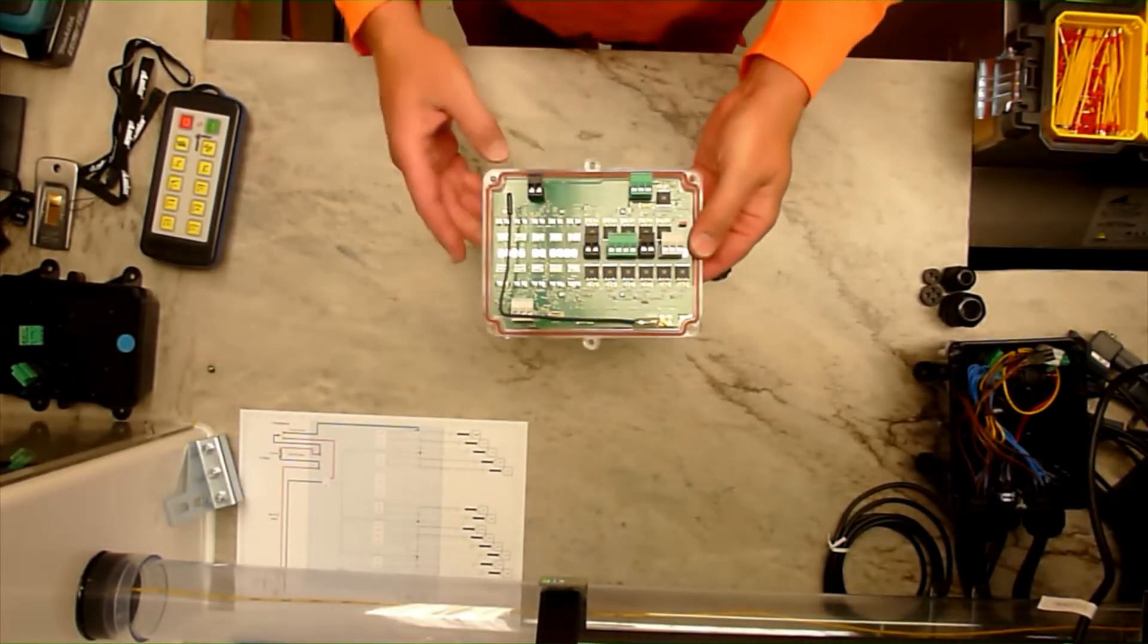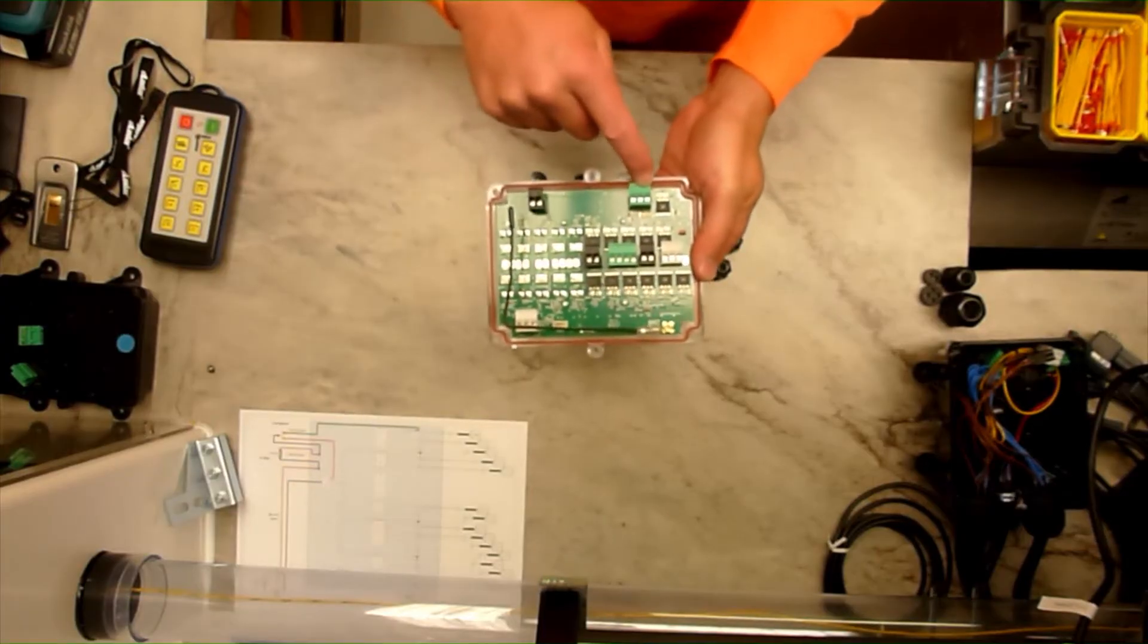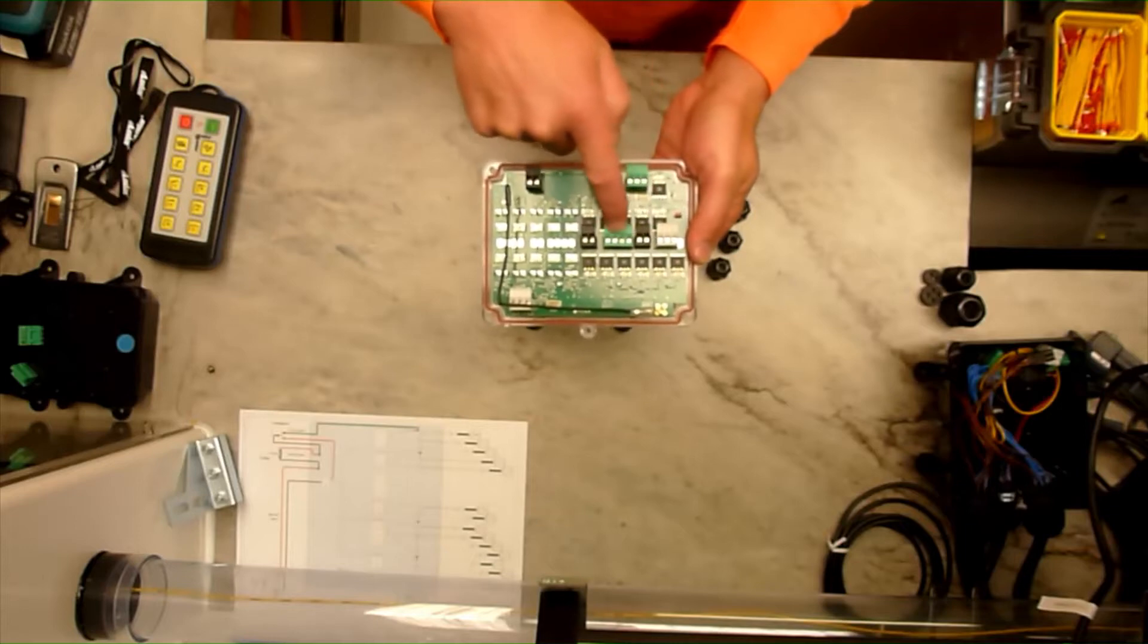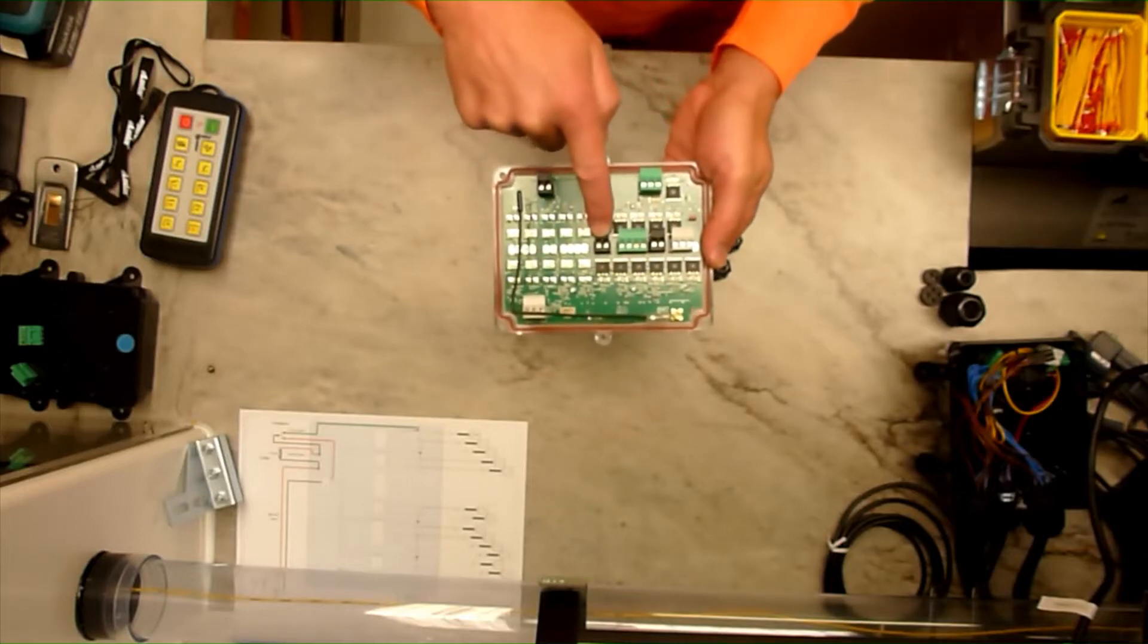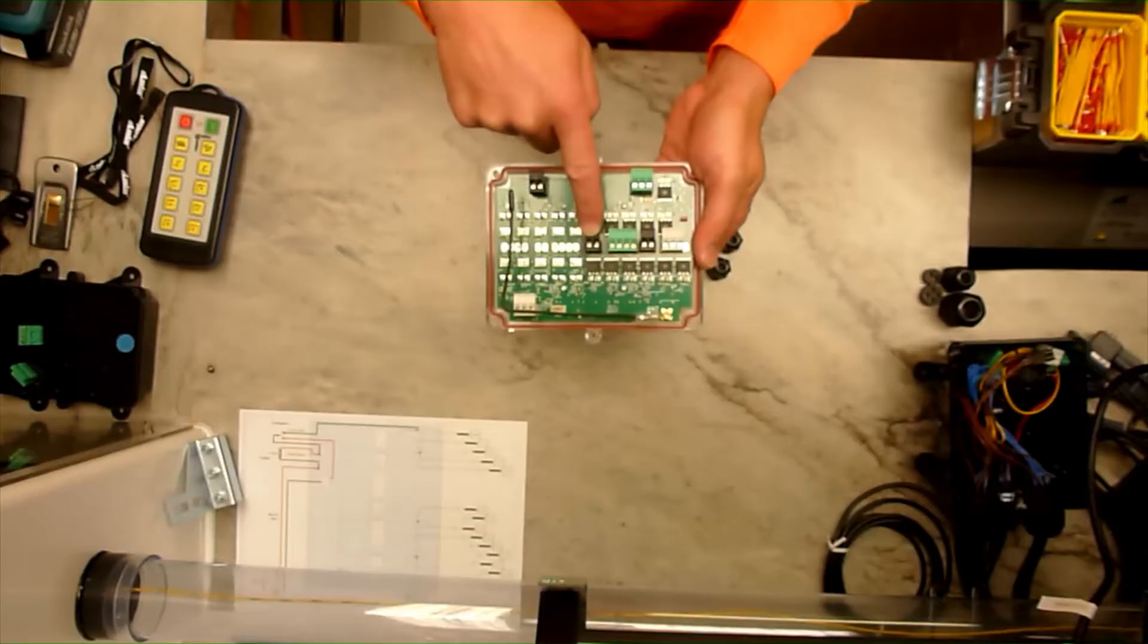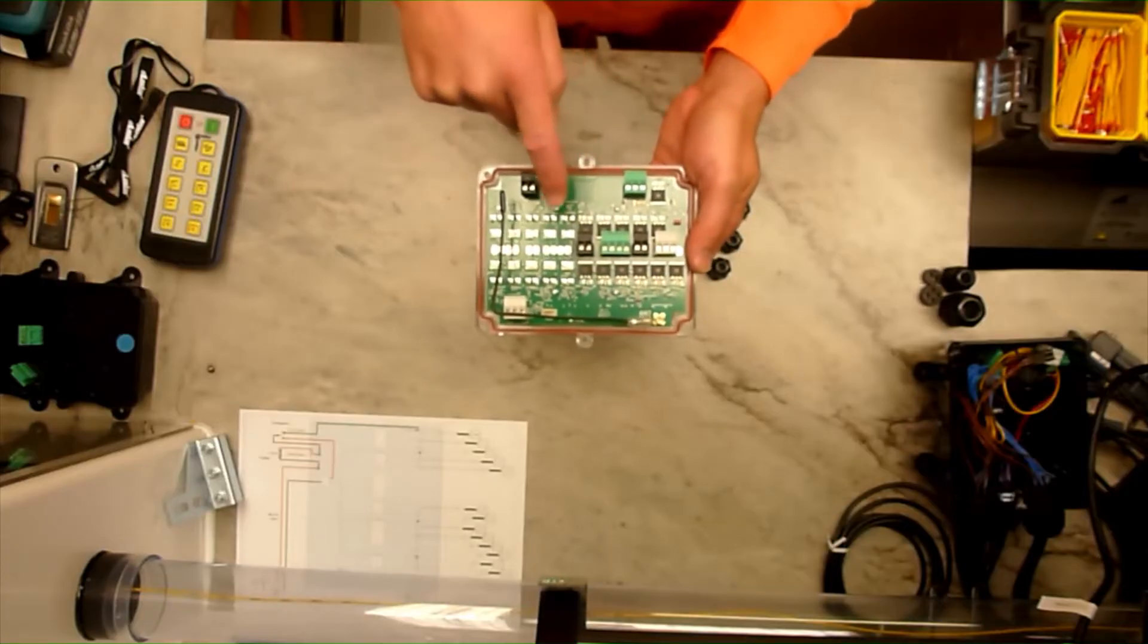What you're going to do then is wire it up with power and ground to here and then each one of these outputs is a positive output. So you're going to need to connect together all the neutrals from your solenoid valves into an earth.